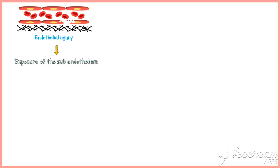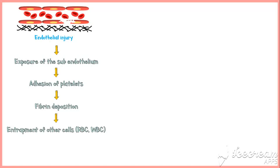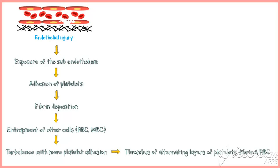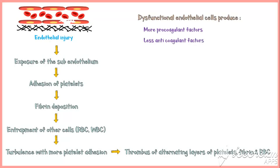When there is endothelial damage, the underlying subendothelium may be exposed. Platelets get adhered to the subendothelium, followed by aggregation of more platelets to form a platelet plug. The coagulation cascade then gets activated with resultant fibrin deposition. Other cells such as red and white blood cells also get entrapped within the fibrin meshwork, forming a thrombus of alternating layers of platelets, fibrin, and red blood cells. Dysfunctional endothelial cells also produce more pro-coagulant factors and less anticoagulant factors.